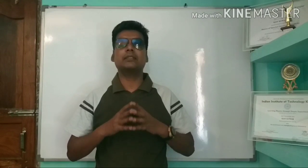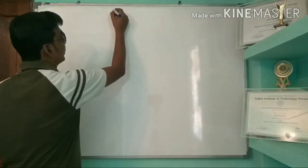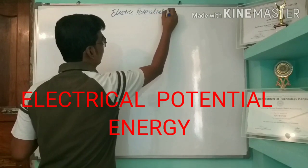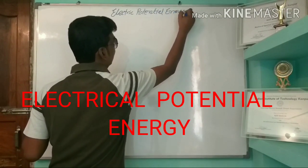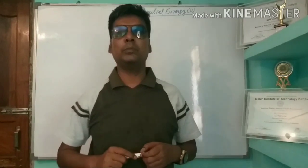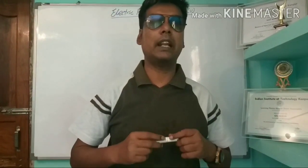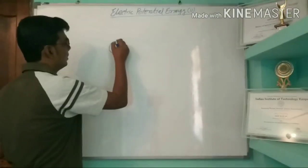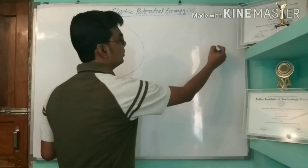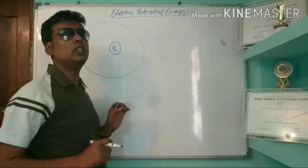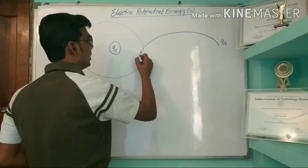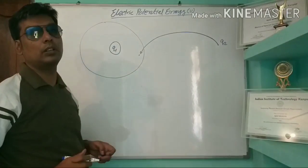Now we will see what is electric potential energy. Electric potential energy is the amount of work done to bring a unit positive charge from infinity to a certain point within an electric field. Suppose there is a charge Q1 and this is the electric field of this charge. Now another charge Q2 is a unit positive charge. The amount of work done to bring this charge from infinity to a certain point within an electric field is called electric potential energy.